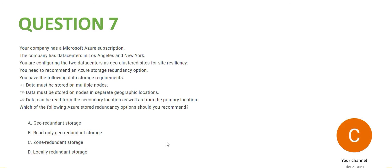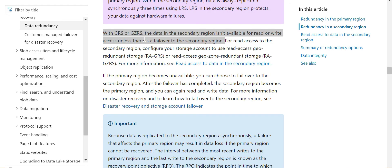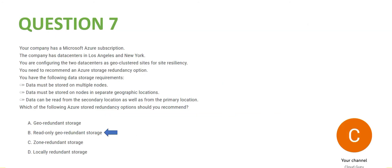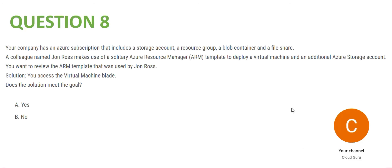Geo-redundant storage means if one fails the other can be accessed, but the requirement says data should be readable from both the secondary and primary location at the same time. That requires read-only geo-redundant storage. The documentation clearly states that data in the secondary region is not available for read and write unless there is a failover — that is why A is wrong, so B is the answer.